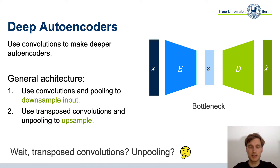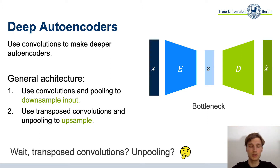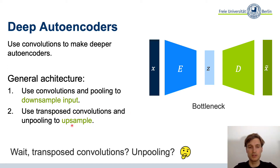We are talking about deep learning, so we make things deeper. As discussed in the last lecture, how do we make things deeper with convolutions and pooling? The general architecture we propose here would be: for the encoder, convolutions and pooling to downsample the input; and for the decoder, transposed convolutions and unpooling to upsample again. But we haven't talked about transposed convolutions and unpooling yet, so let's introduce them.